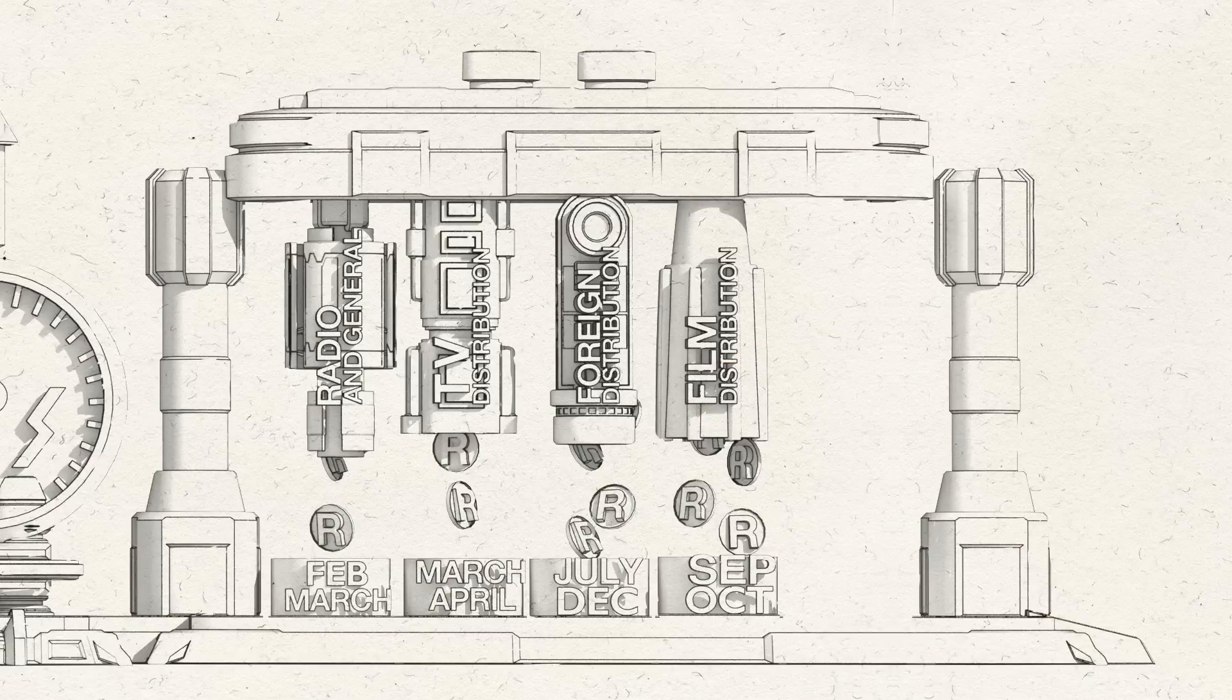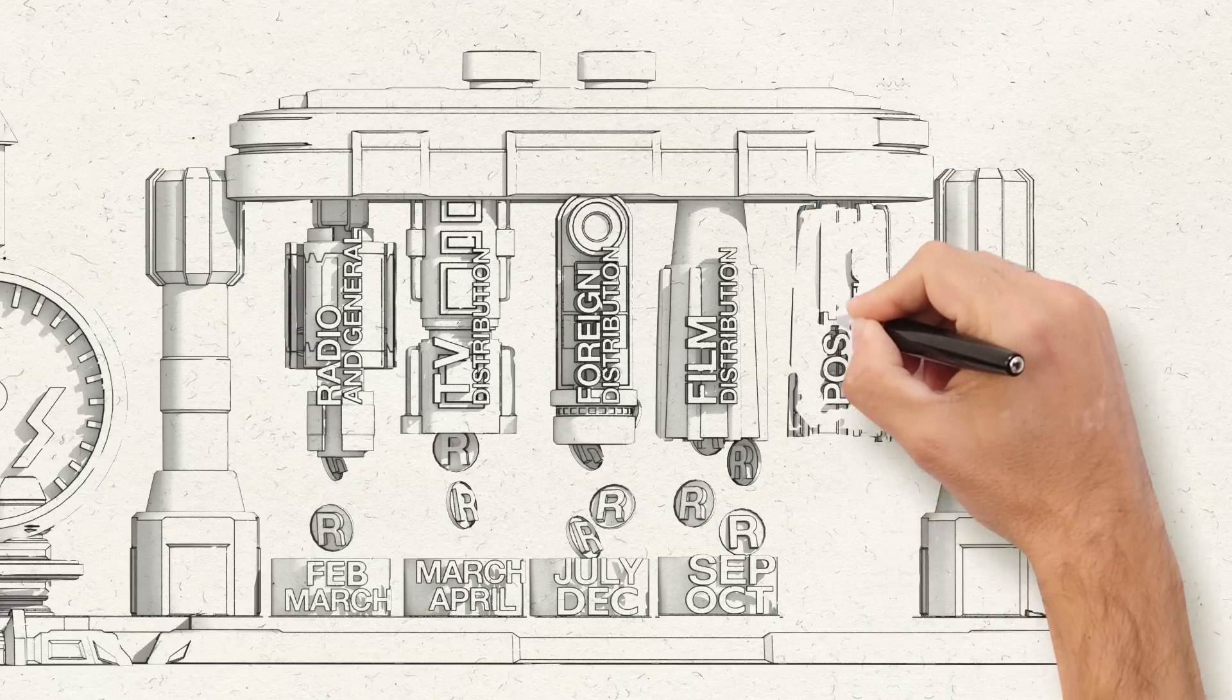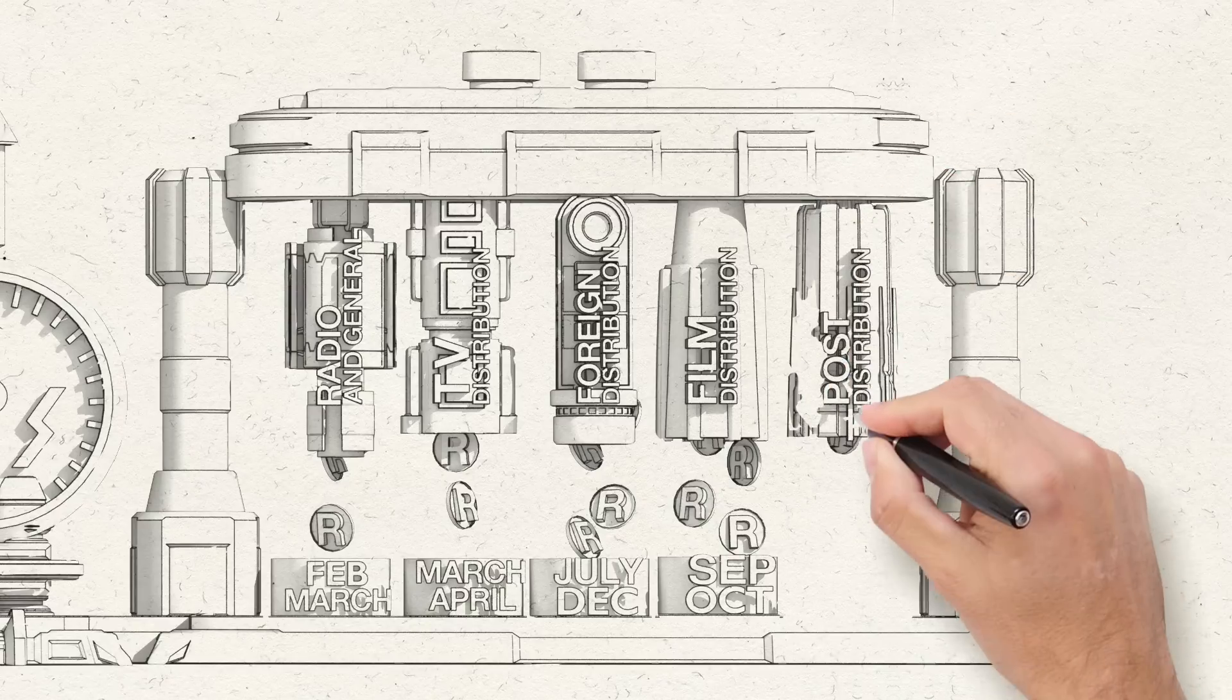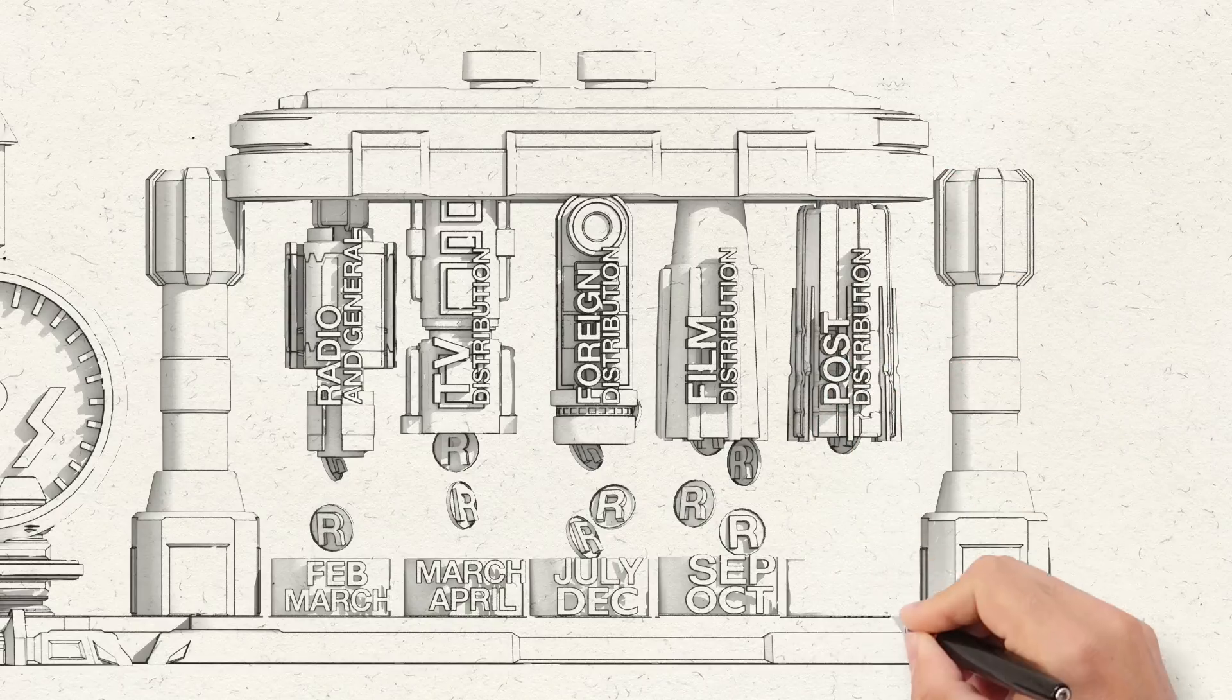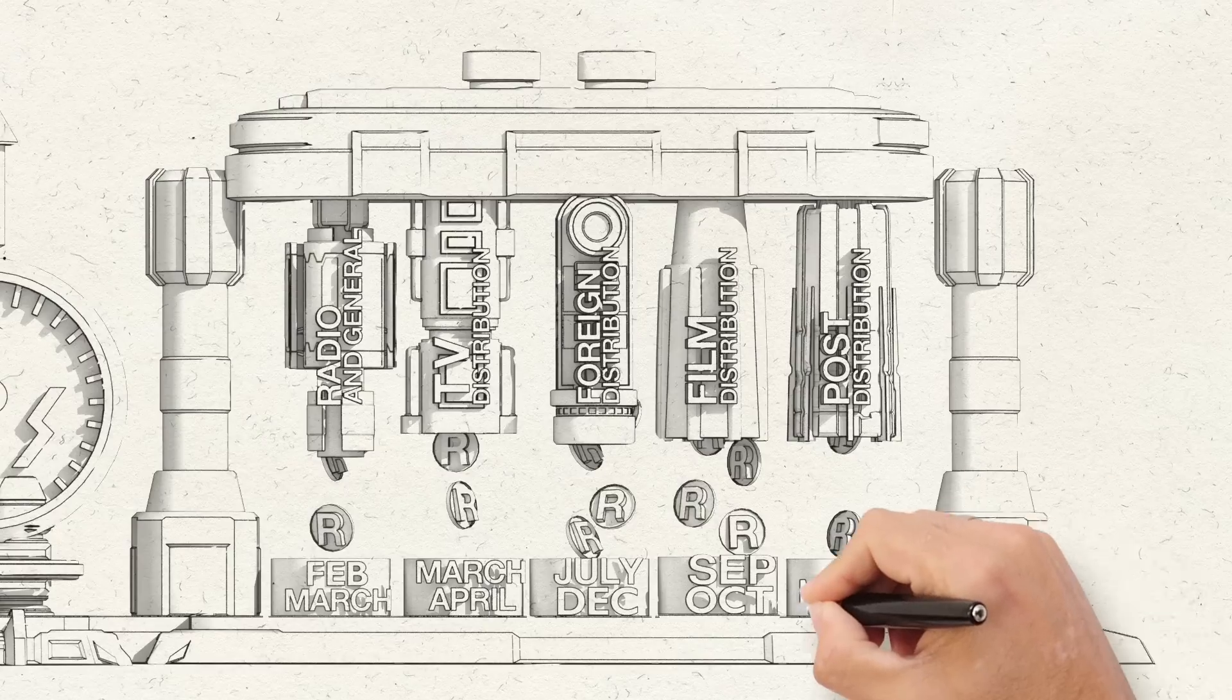Now, to make things even more complicated, we also have something called post-distribution, which are monthly payouts to settle up any outstanding money from the big four distributions that, for some or other reason, didn't get paid to you at the time.